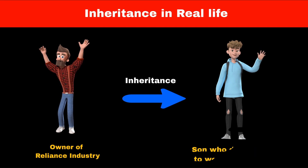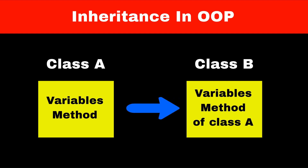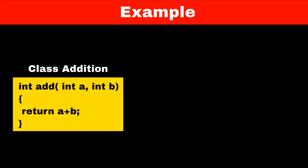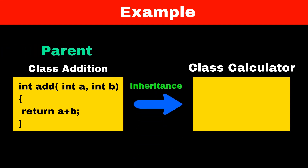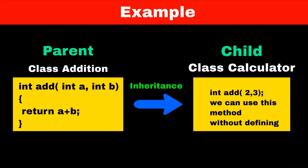This similar concept is used in programming. Inheritance is a concept that allows us to use variables and functions of one class in another class. Consider a class called addition which has a method that will add two numbers. Now in the future if we want to implement a calculator class that has many functionalities, and one of them is to add two numbers, we can reuse the existing code using inheritance. Consider addition class as the parent class and calculator class as the child class. With the help of inheritance we can use the method of the addition class in the calculator class without object creation.